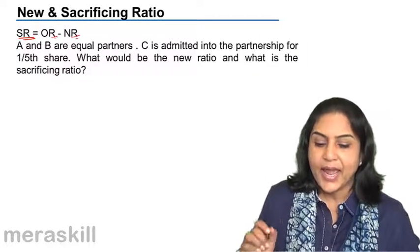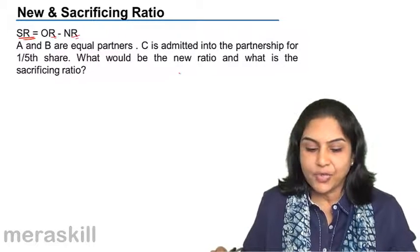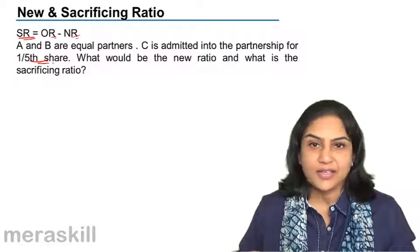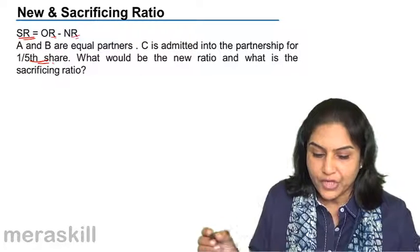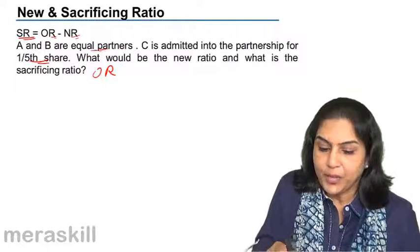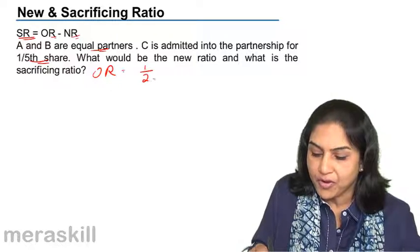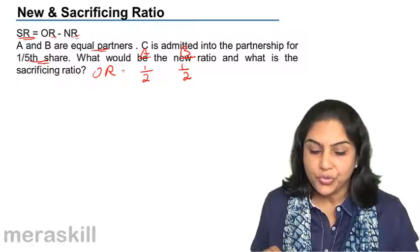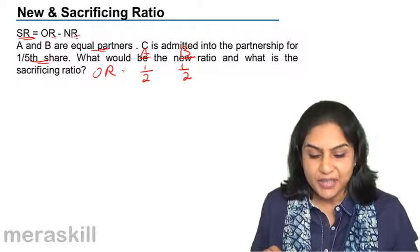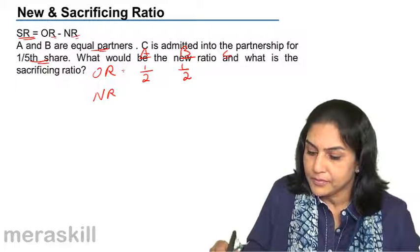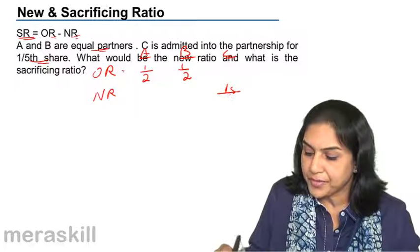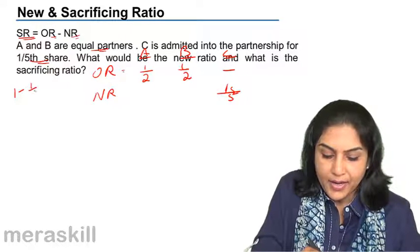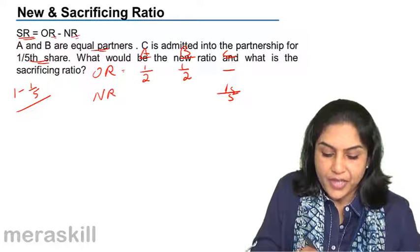Let us take an example. A and B are equal partners. C is admitted into the partnership for one-fifth share. What would be the new ratio and what is the sacrificing ratio? The old ratio was half and half — equal partners. C's share is one-fifth, so the remaining share is four-fifths.